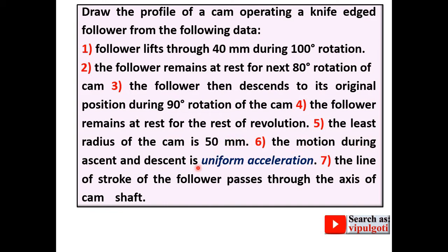The motion during ascent and descent is uniform acceleration. So this is a very important part and that will affect the displacement diagram. Next, the line of stroke of the follower passes through the axis of the camshaft. That means the offset distance is zero and so there is no need to draw offset circle as well as the tangent lines.